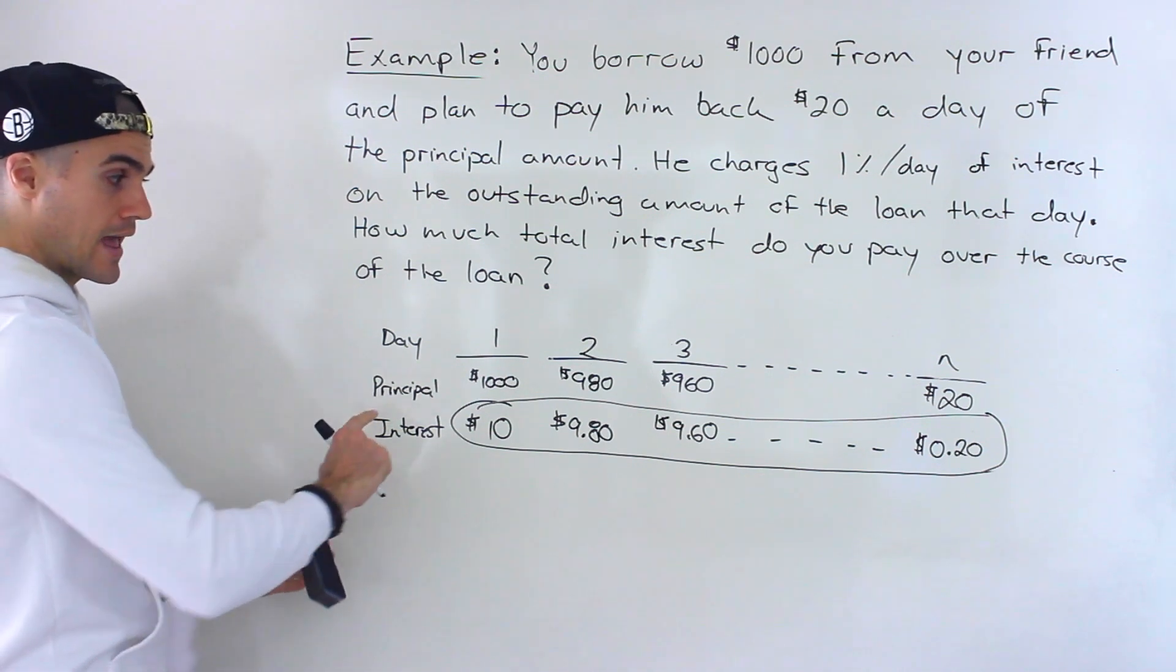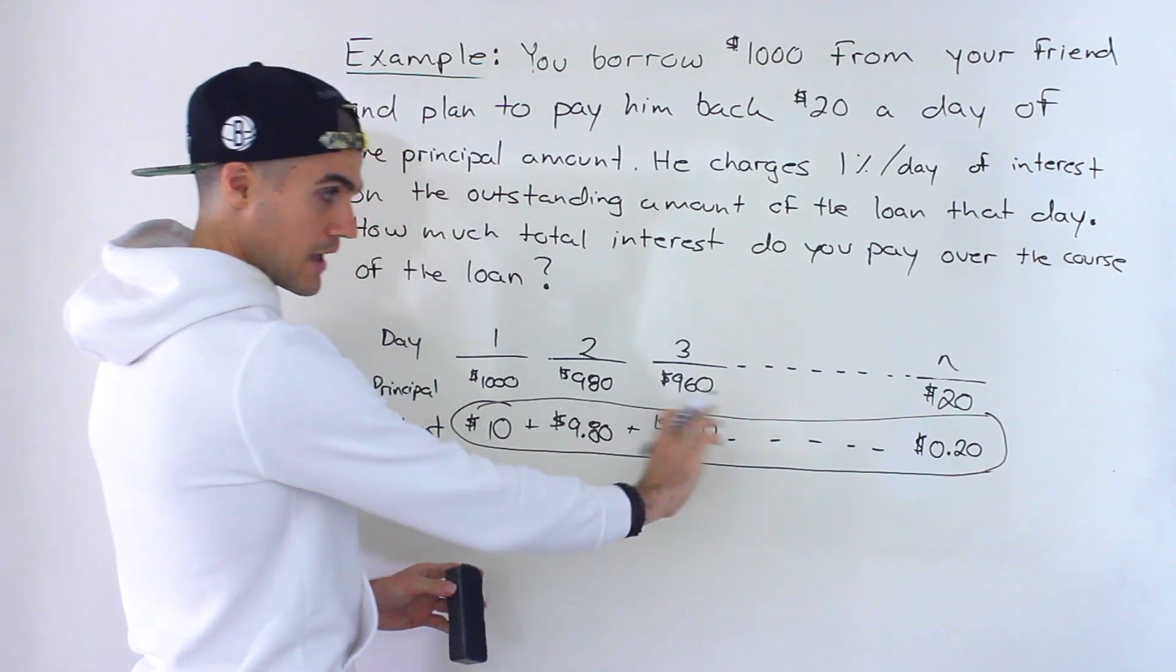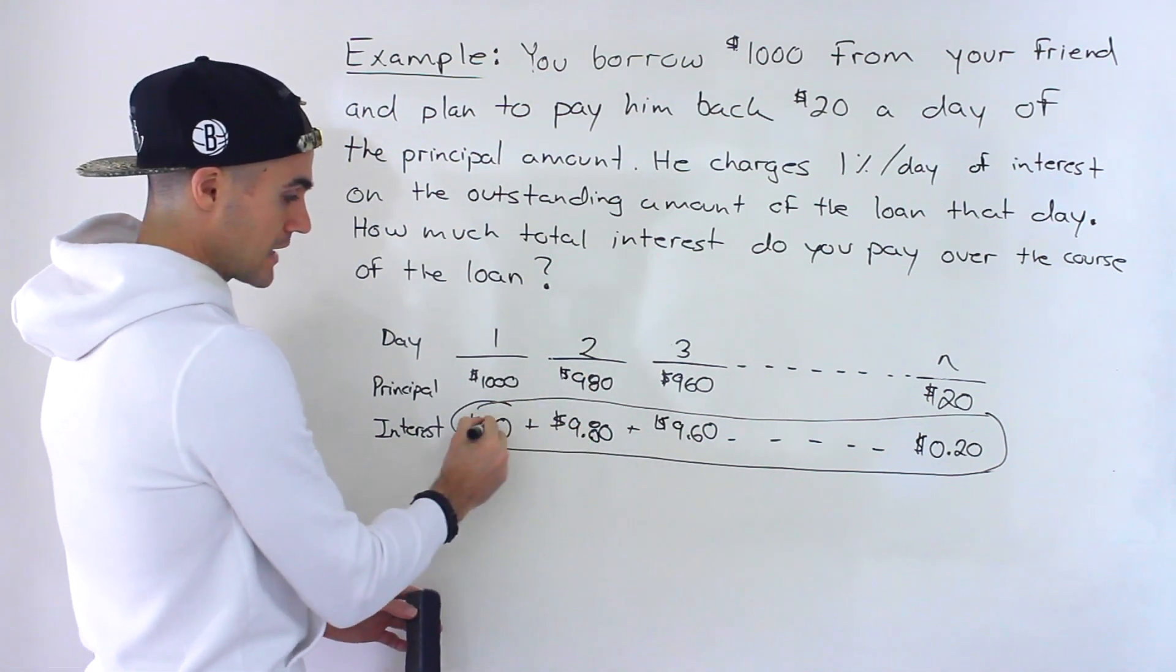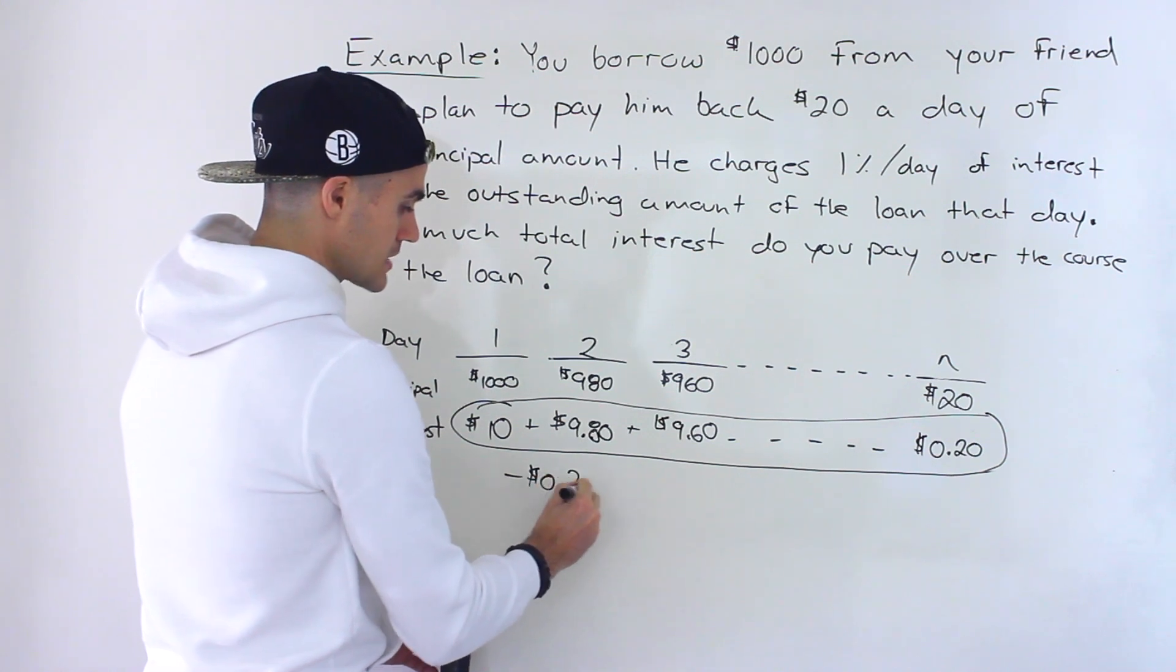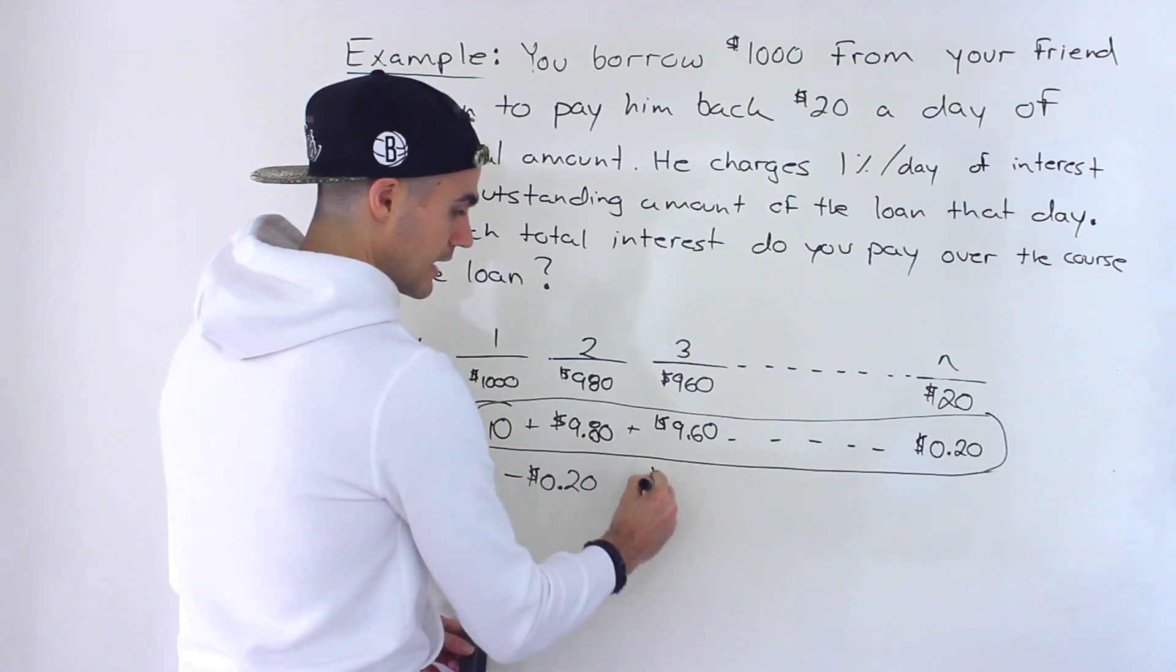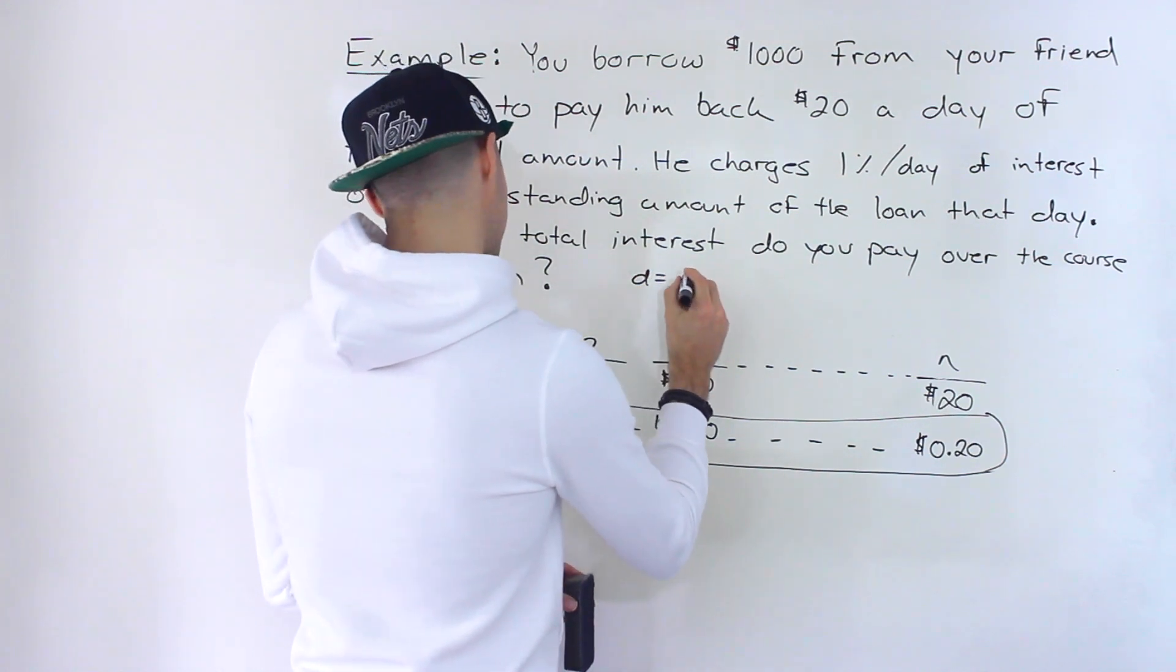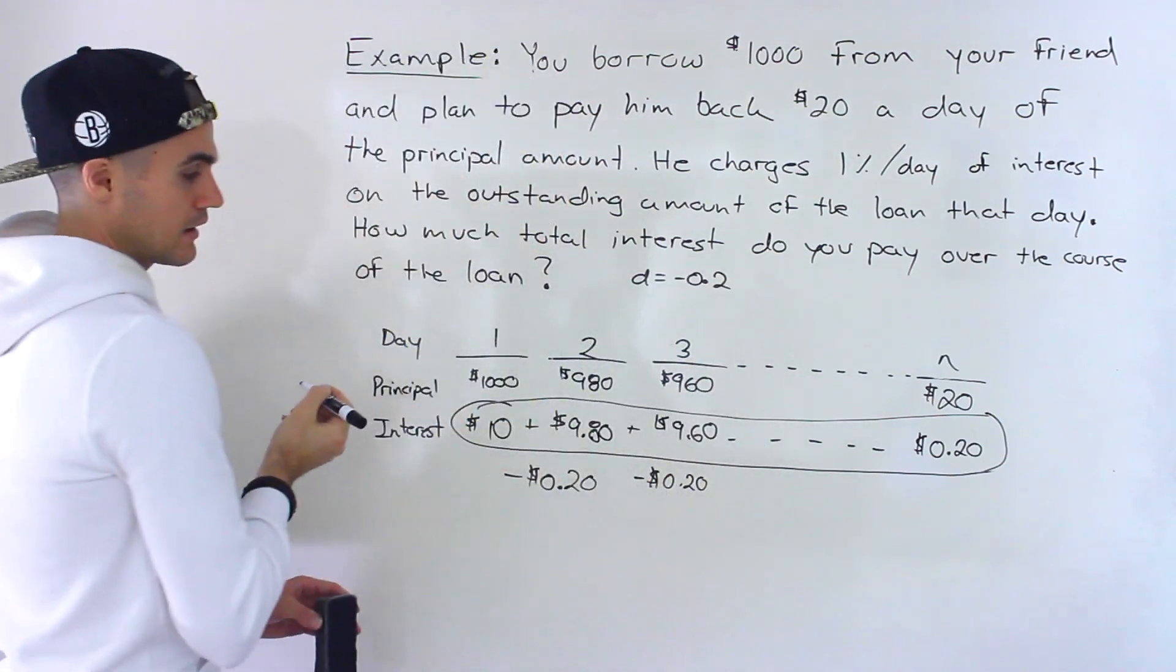Notice first off, this is an arithmetic series because notice that the difference is common. $9.80 minus $10 is negative $0.20 or 20 cents. $9.60 minus $9.80 is negative 20 cents. So in this arithmetic series, the d value is negative 0.2.